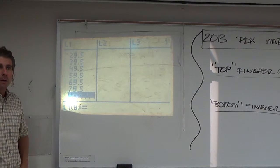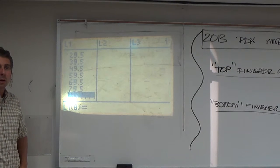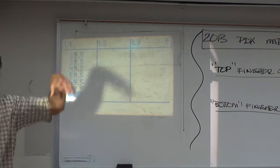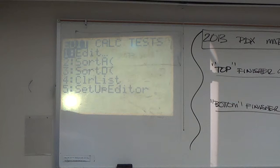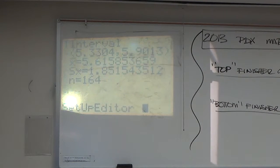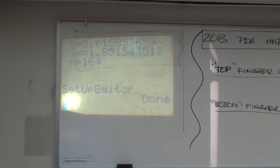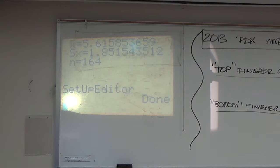What do you do when you delete your list? Easy fix. Press your STAT button. If you press the delete button instead of clear, you've erased your list — L1. Press 5, press enter. It's back.